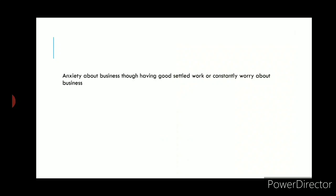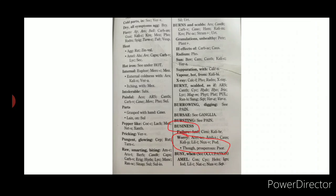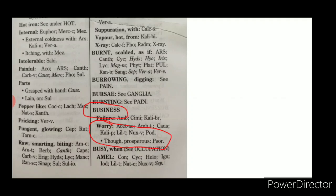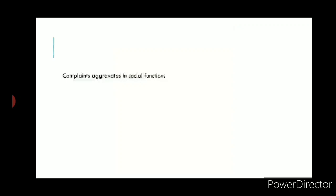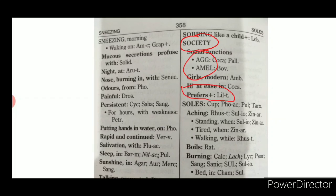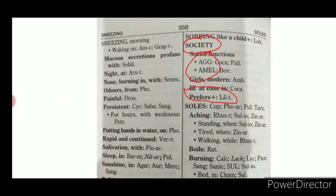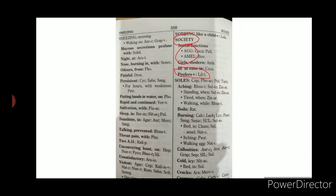There is also a rubric 'Business — Worry Though Prosperous,' for when a patient has a well-flourishing business but still worries about it. Another rubric covers complaints aggravated in social functions — the rubric 'Society' includes sub-rubrics for amelioration, aggravation, and preference for or avoidance of social settings.